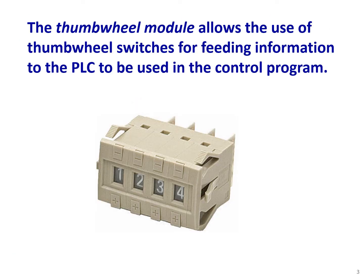The thumb wheel module allows the use of thumb wheel switches for feeding information to the PLC to be used in the control program. It's another type of special input that needs a special module. It's a digital thumb wheel, and we can assign a number and send it to the PLC program. This number could be a preset value — for example, for a water tank — and the operator can change that. This type of input device needs a special module.